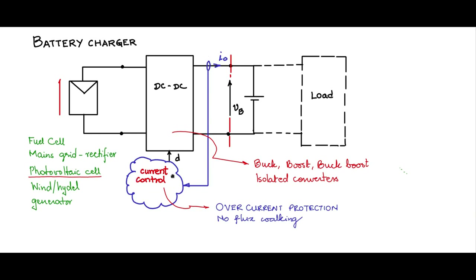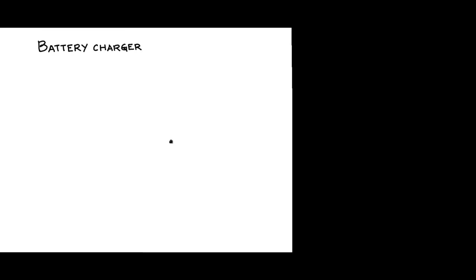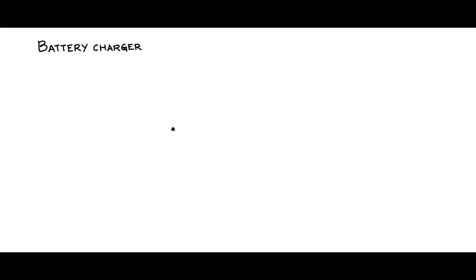The sensed current is used to control the inductor current. The terminal voltage of the source is VT, and IPV is the input current to the DC-DC converter. Let me discuss the principle of operation and the circuit schematic for controlling the DC-DC converter for current control. Later, we will also address some problems by providing slope compensation. We will discuss the battery charger circuit where MPPT is integrated into the charger scenario.